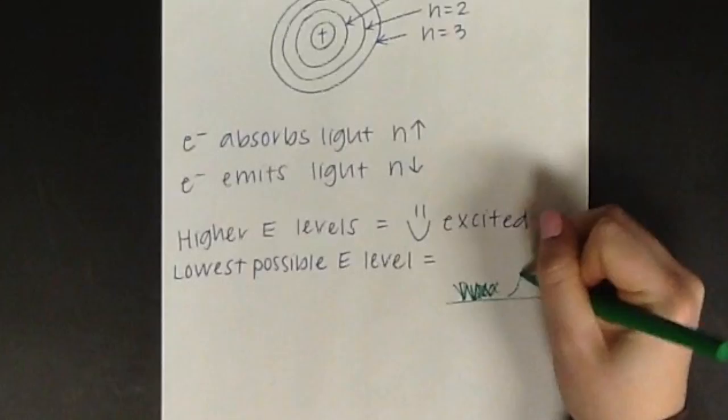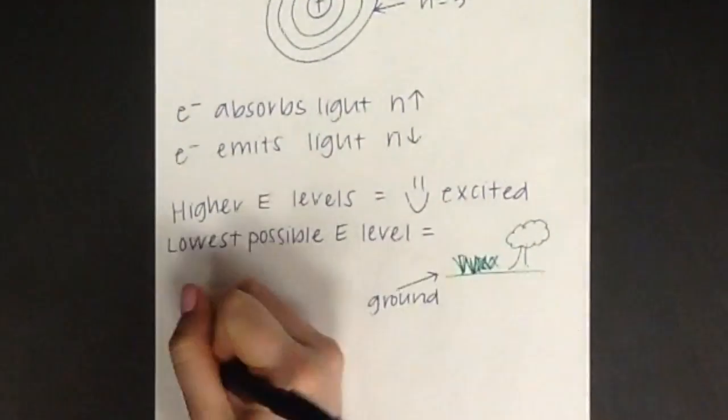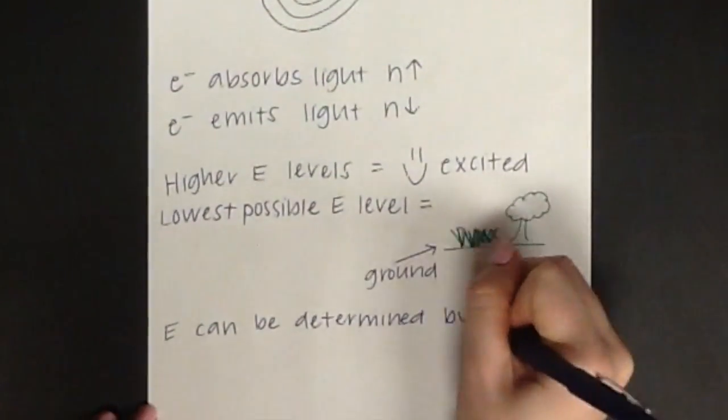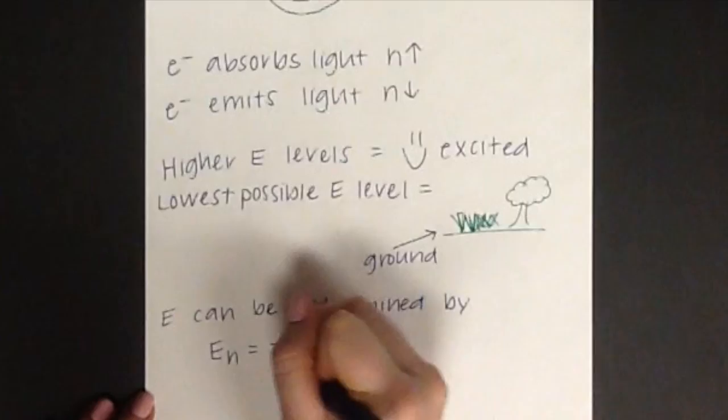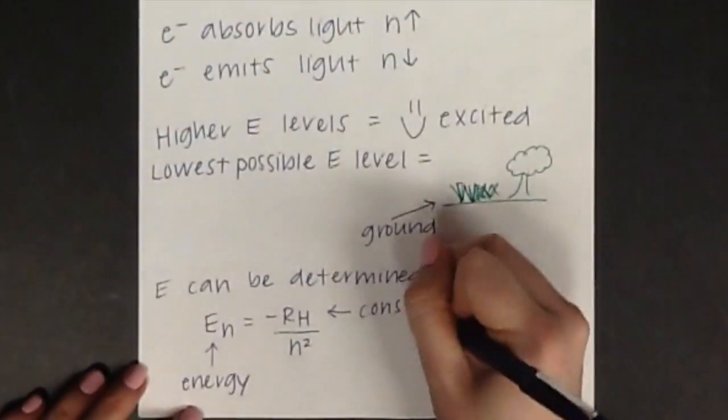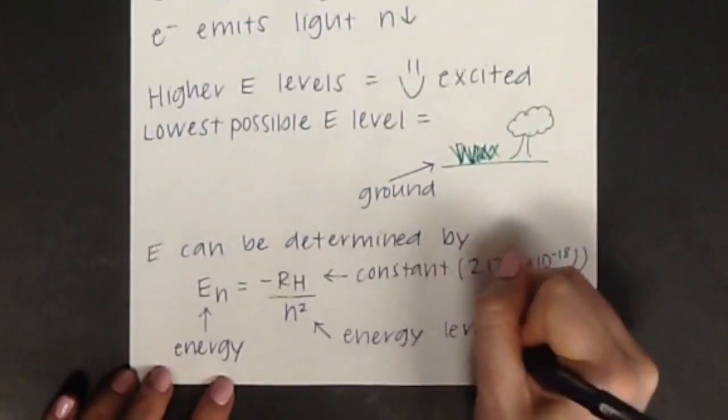The energy values for a hydrogen atom can be determined by an equation that was developed by Niels Bohr. E sub n is equal to negative R sub h divided by N squared. With E being the energy, R being the constant value of 2.179 times 10 to the negative 18th joules, and N is the principal quantum number or energy level.